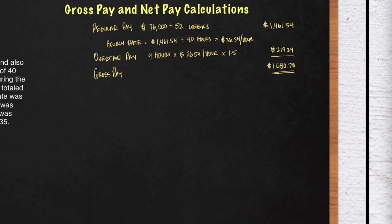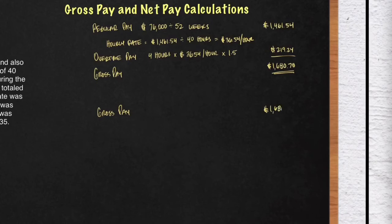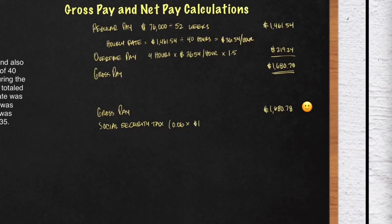Now I'm going to rewrite that and emulate what you may see on a pay stub. At the very top, you'll see gross pay, which is $1,680.78. In the middle, you're going to have all your deductions. The first deduction is social security tax — here, social security is 6%. Multiply 0.06 times $1,680.78, which is his gross pay. That will give you $100.85. You have to deduct that.